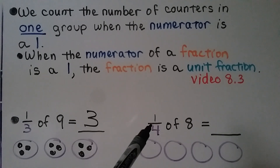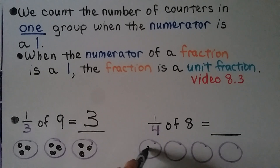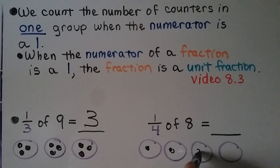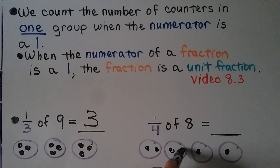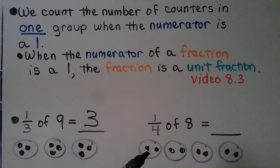Now here the denominator is four, so we made four groups. We need one fourth of eight. We start putting counters one at a time, taking turns into the groups until we have eight: one, two, three, four, five, six, seven, eight. There's two in each group. We use one of the groups because the numerator is a one. In one of the groups there's two of them, so one fourth of eight is two.